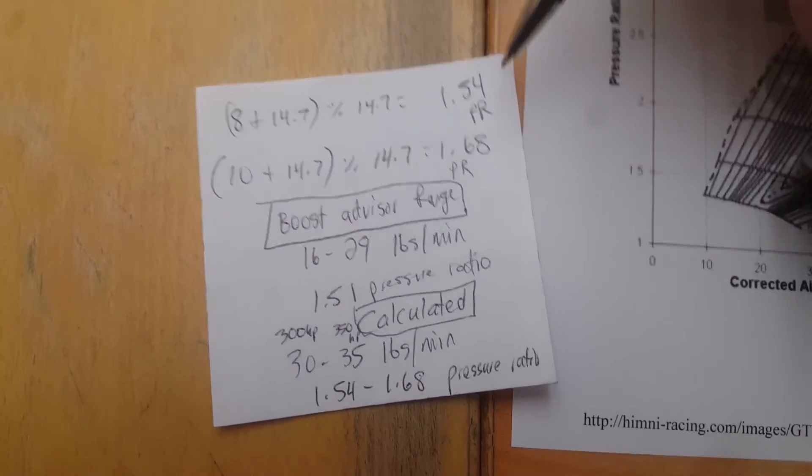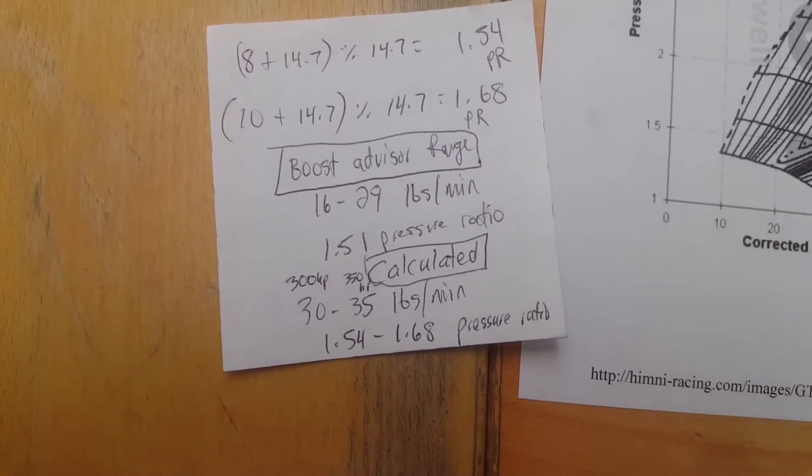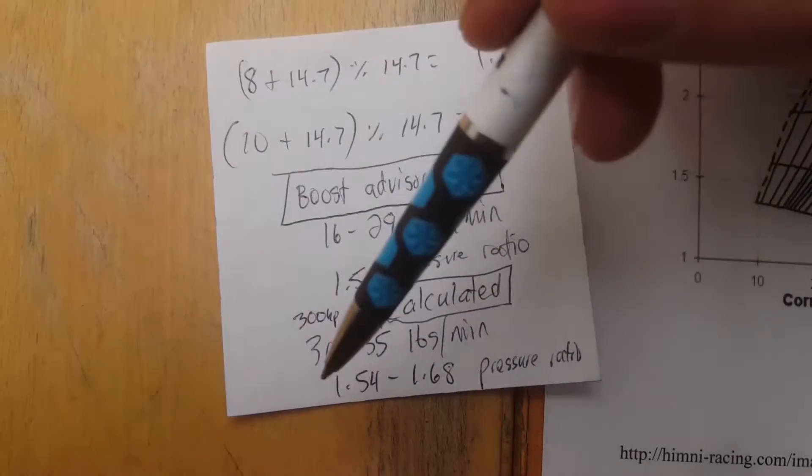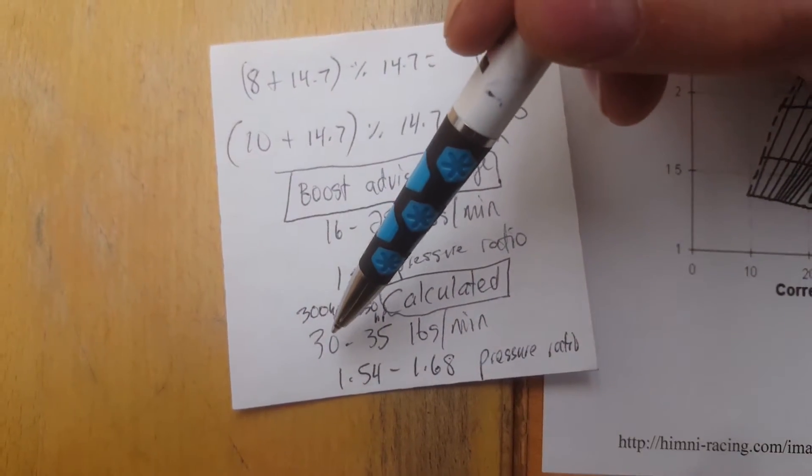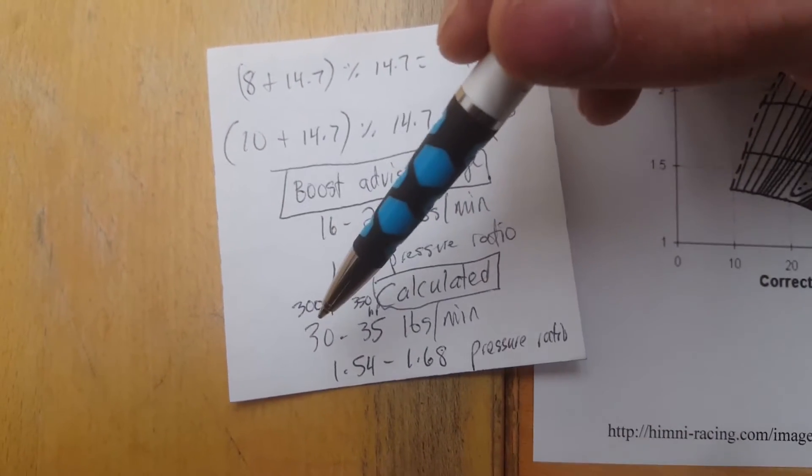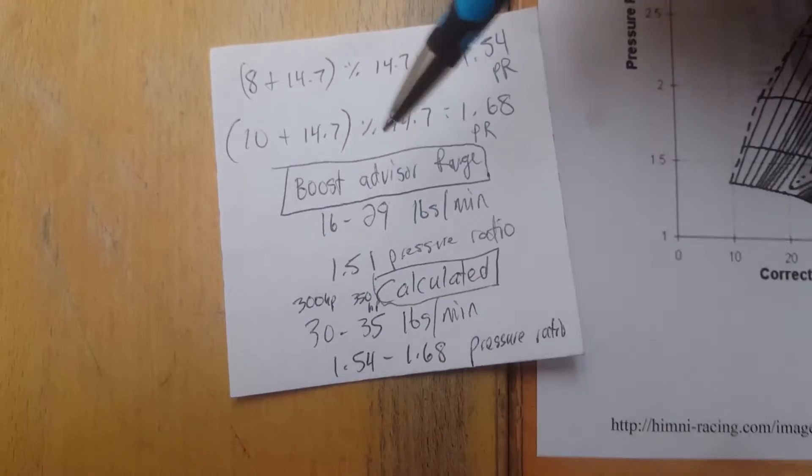Basically, one pound a minute is equal to 10 horsepower. So here, I'm shooting for 300 or 30 times 10 pounds per minute or whatever. The calculation is 300 horsepower, essentially. 350, 35.